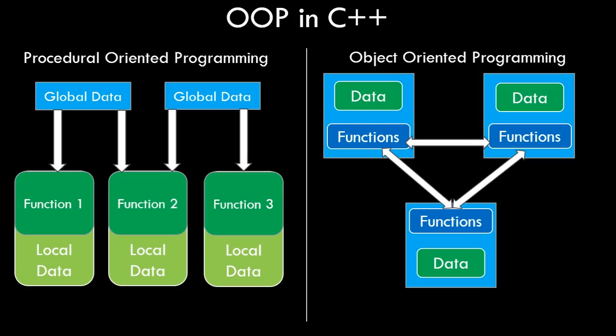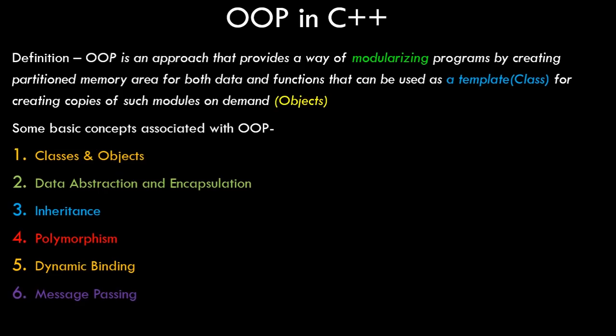Let's move ahead and see what object oriented programming is and its key features. The bookish definition: object oriented programming is an approach that provides a way of modularizing programs by creating partitioned memory areas for both data and functions, which can be used as a template — essentially a class — for creating copies of such modules on demand, which are objects. This idea will get clearer when we see the practical example.